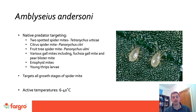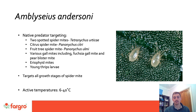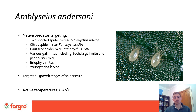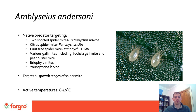Starting with Amblyseius andersoni: this is a good predator to start with because it's generally used as a preventative measure early in the spring. As it is native to the UK, it is better adapted to our climatic conditions. The active temperatures are between 6 to 40 degrees. They also enter diapause around the same time as spider mites, so when they emerge they emerge with these micro colonies of spider mites and can target them really early on in the season, as soon as climatic conditions become adequate.